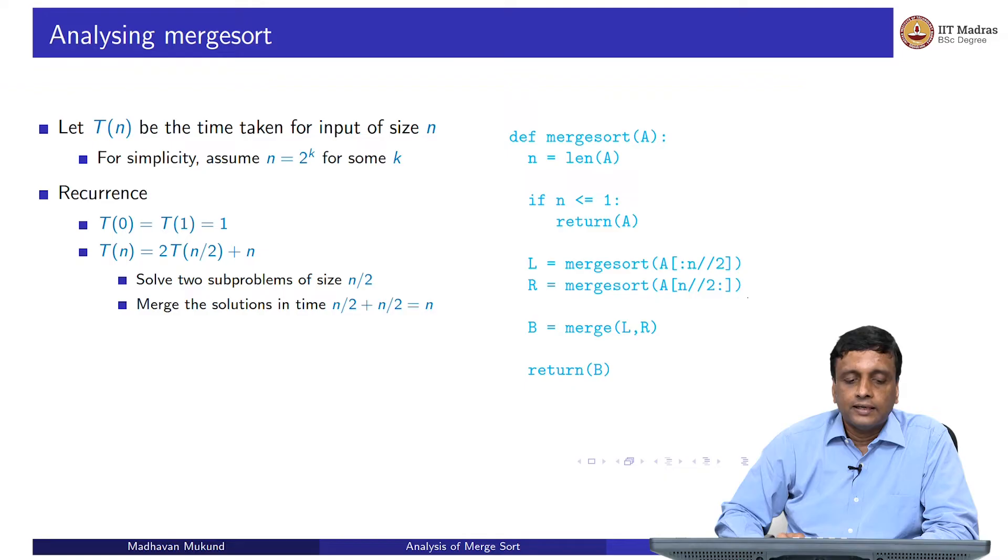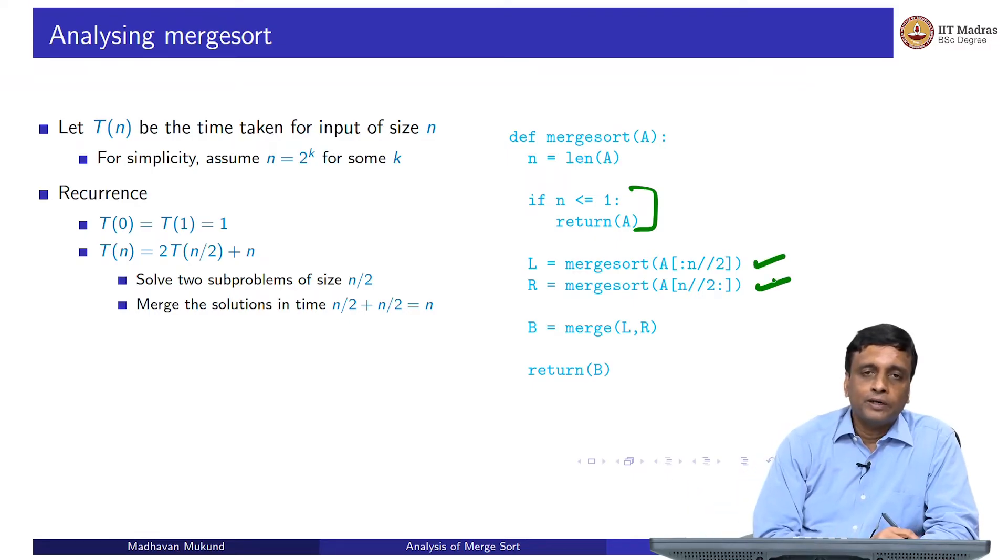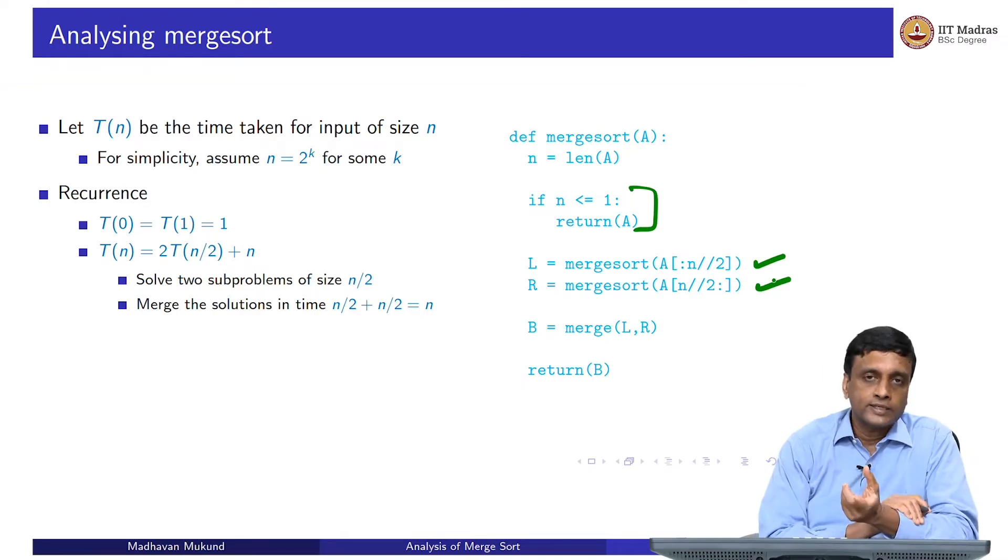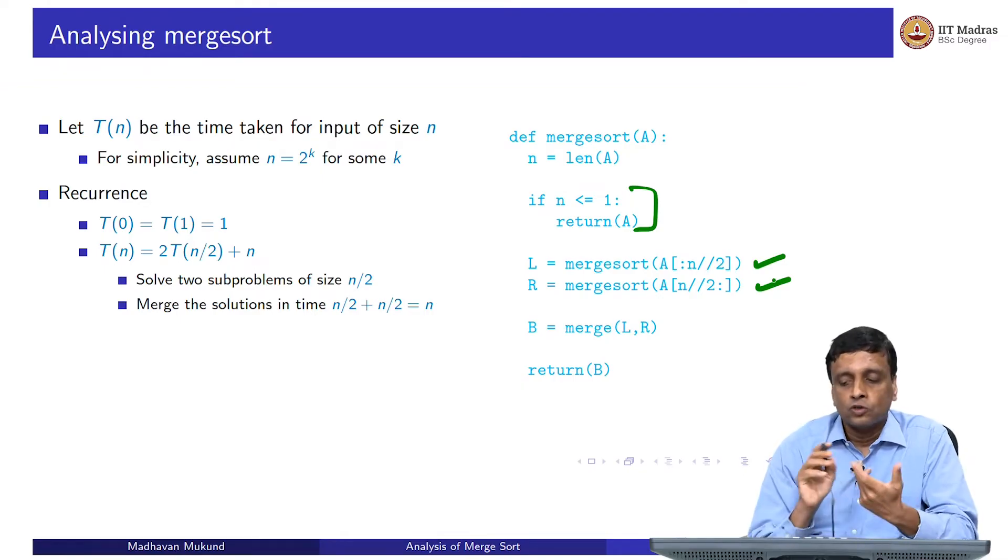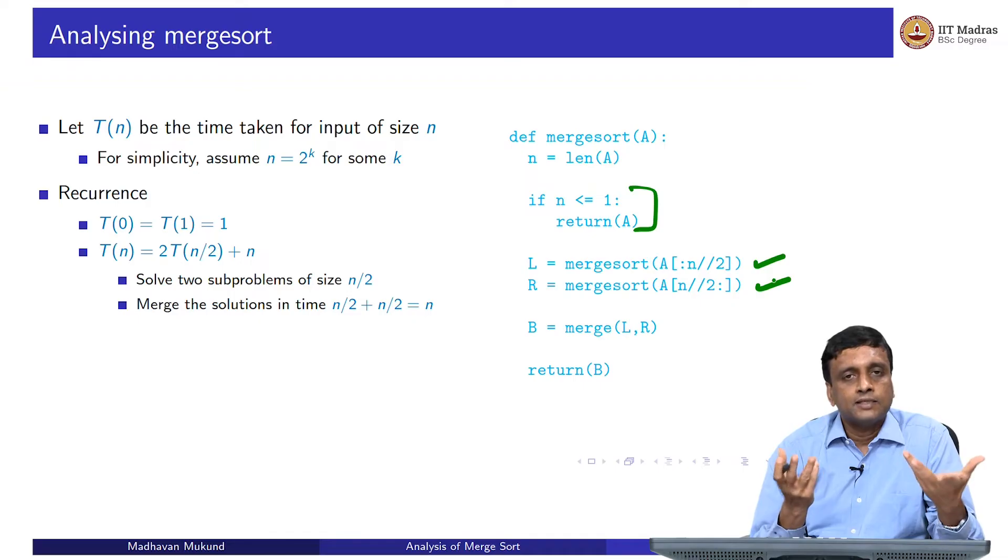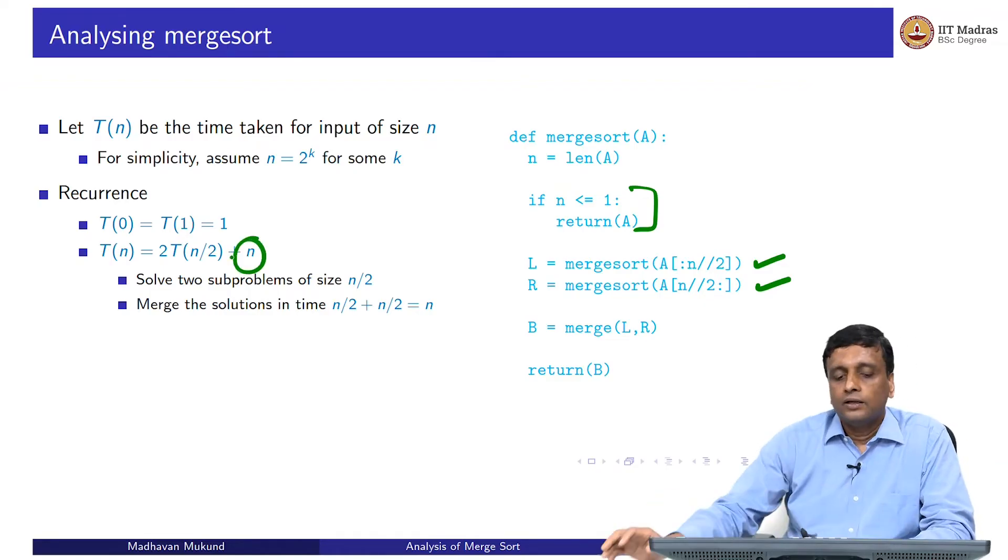Now our recurrence basically says that if n is 0 or 1, then I return immediately, because n is less than or equal to 1, I return immediately. So T(0) and T(1) are both 1. And otherwise, I have to do 2 times T(n/2) work, because that is the cost of sorting half the array twice - the first half and the second half. In binary search, we only have to do either the first half or the second half; here we are doing both. So we sort both halves. And then we are merging them, and we saw that merging two lists of roughly the same size is basically big O of that size. So it is going to take n steps to merge. This is our merging cost.